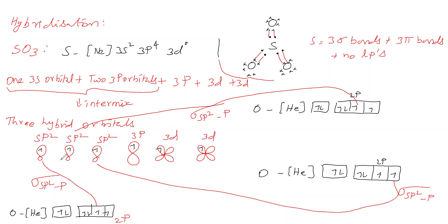Sulfur has provided all three sp² orbitals, each bonded with an oxygen atom through sigma bonds. For pi bonding: the pure 3p orbital of sulfur and the 2p orbital of oxygen undergo lateral overlapping to give a pi bond. Since both are p orbitals, this pi bond is called a p-pi–p-pi bond.